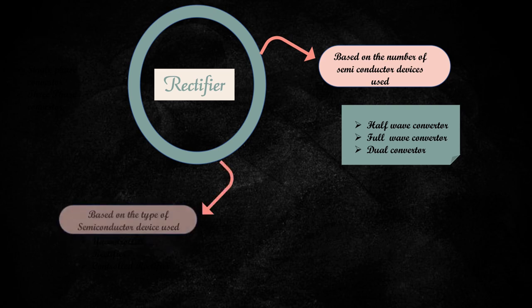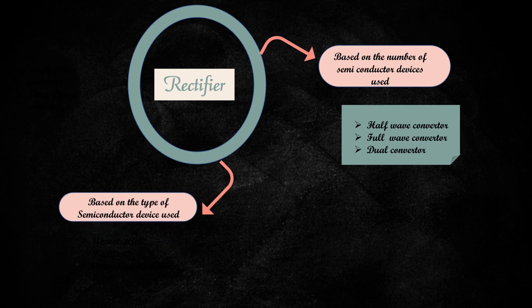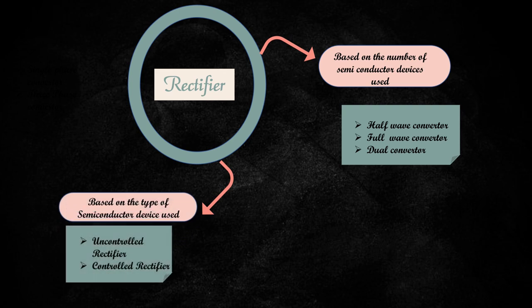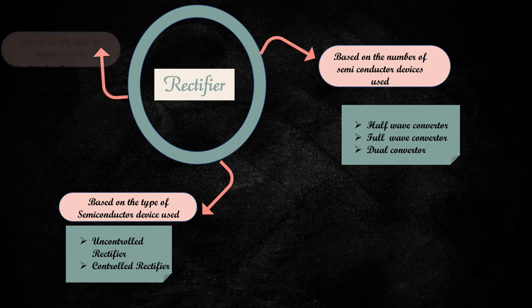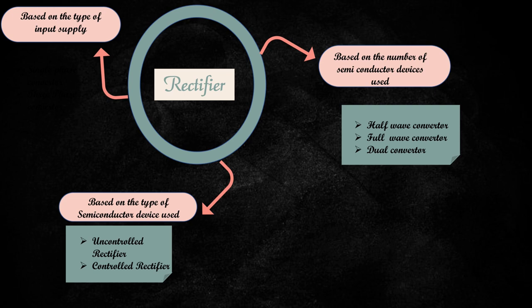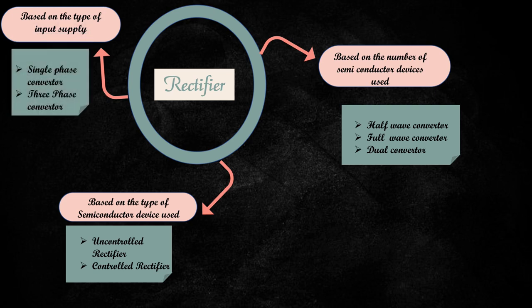Based on the type of semiconductor devices used, the rectifiers are classified as uncontrolled rectifier and controlled rectifier. Based on the type of input supply, the rectifiers are classified as single phase converter and three phase converter.